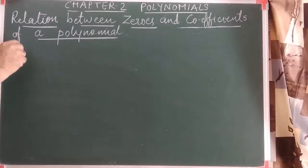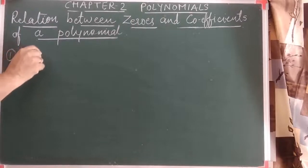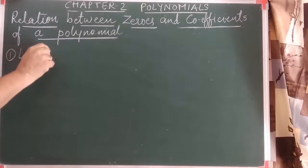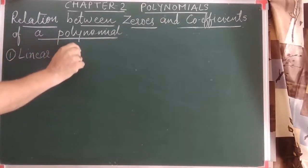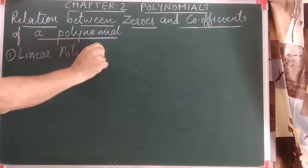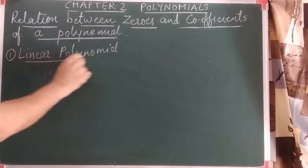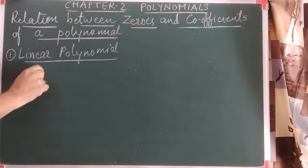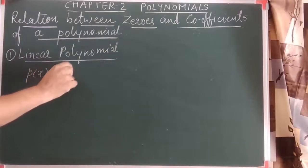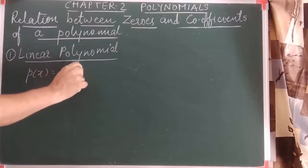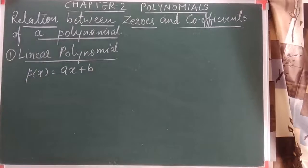The first type of polynomial is the linear polynomial. The standard form of a linear polynomial is p(x) = ax + b. This is the standard form.